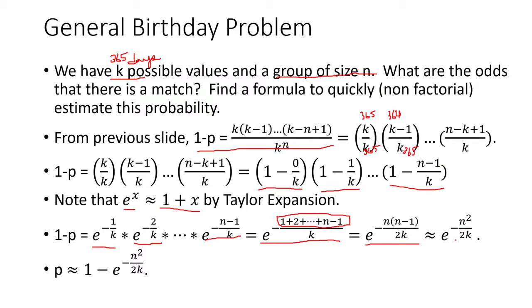So that can reduce into n times n minus 1 over 2k. And that is approximately e to the minus n squared over 2k. So this is our quick formula. And notice that it's a little similar to what you might remember from a probability class as like an exponential distribution, as a very similar form to the exponential cdf.